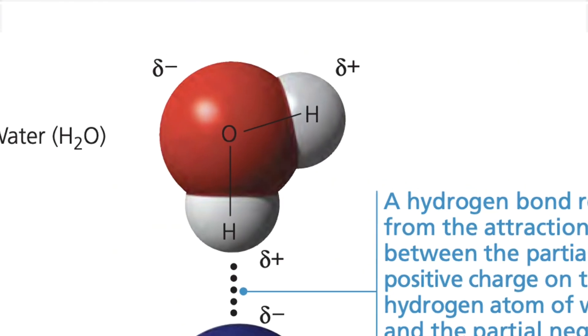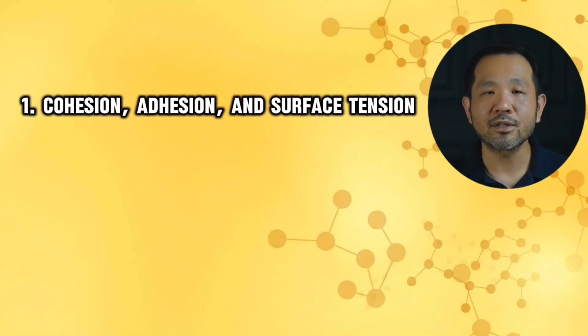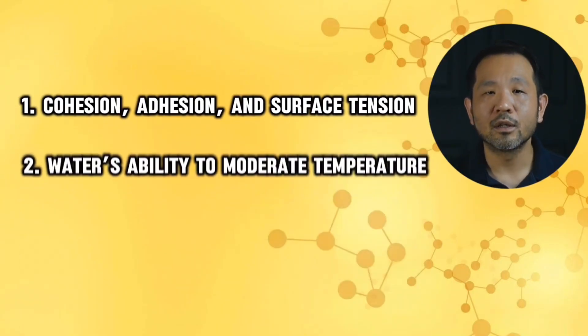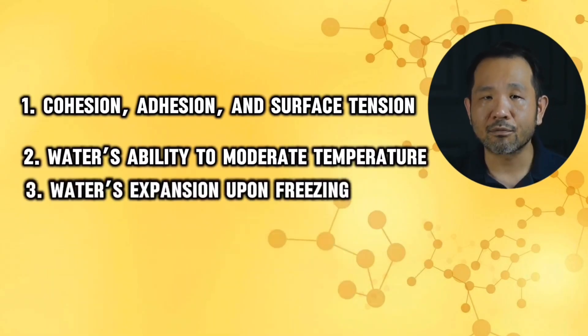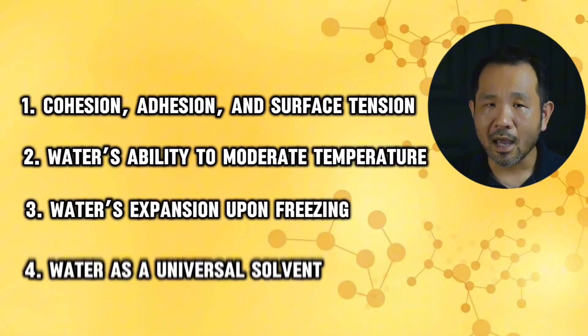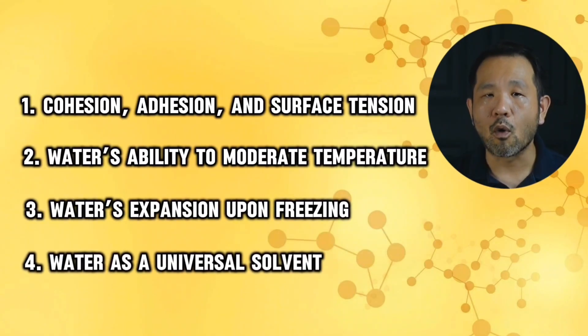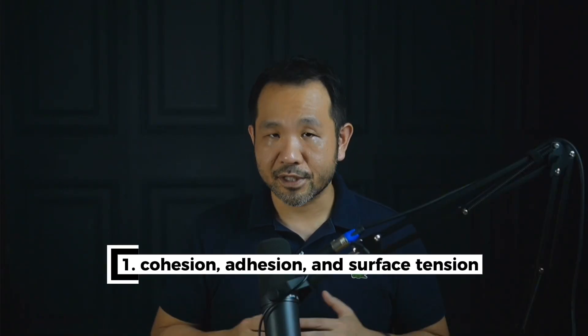For water, it's the structural and electrical nature that allows it to gain four incredibly important properties. For this section on the properties, let's list them out first: one, cohesion, adhesion, and surface tension; two, water's ability to moderate temperature; three, water's expansion upon freezing; and four, water as a universal solvent. Let's begin with cohesion, adhesion, and surface tension.